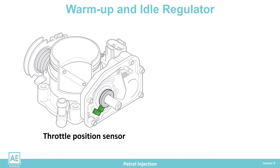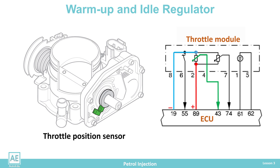The potentiometer converts the throttle angle into a corresponding voltage signal sent to the ECU for further processing. The plus supply of the potentiometer is obtained from the control unit and the minus supply from the module housing. Based on the signal from the sensor, the ECU has information about the current position of the throttle.